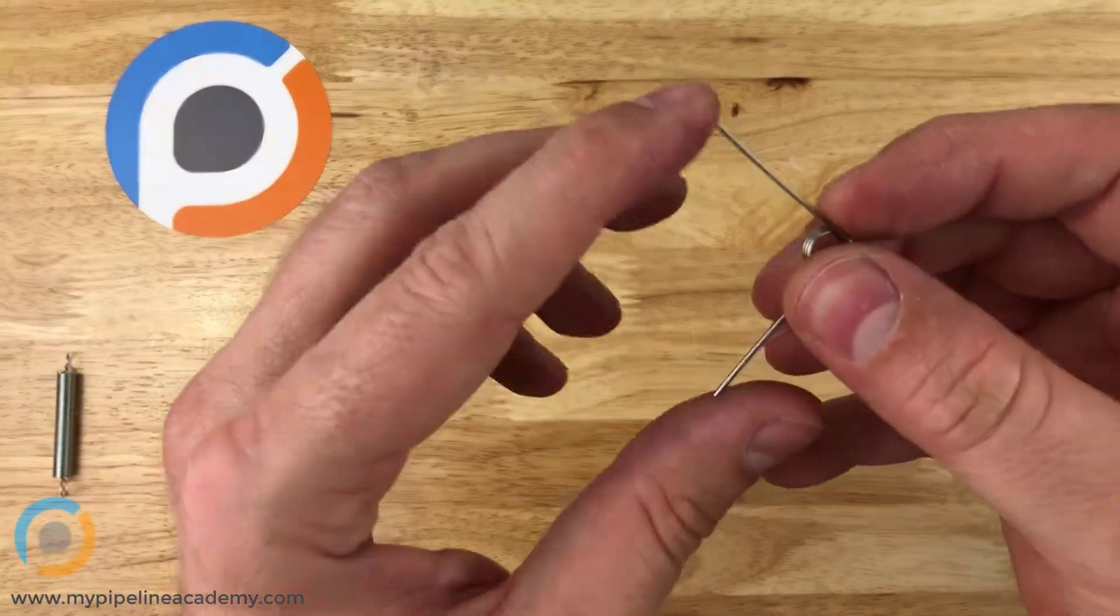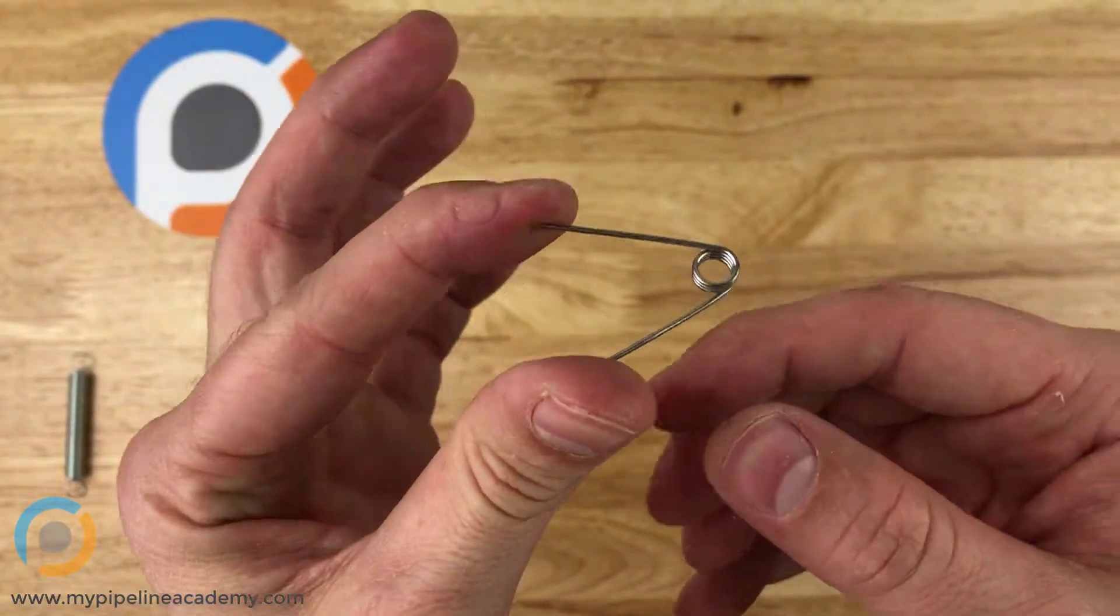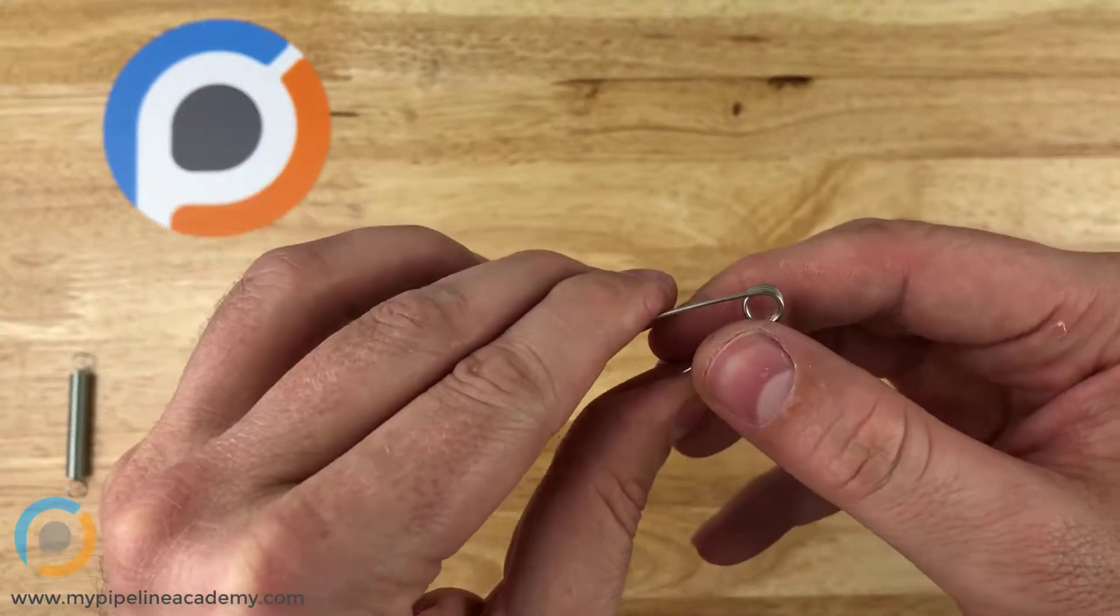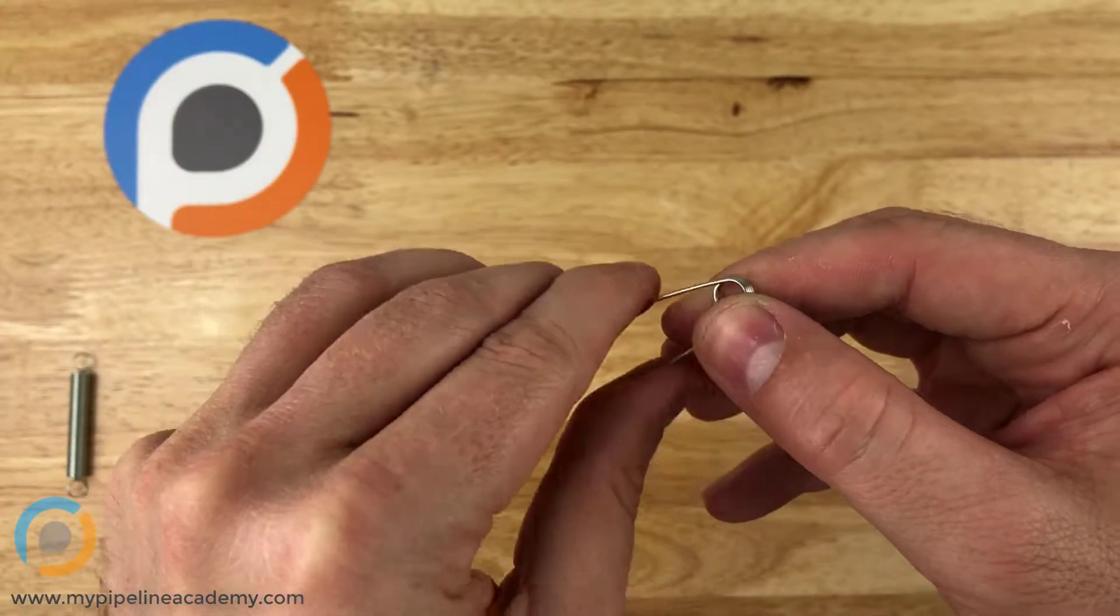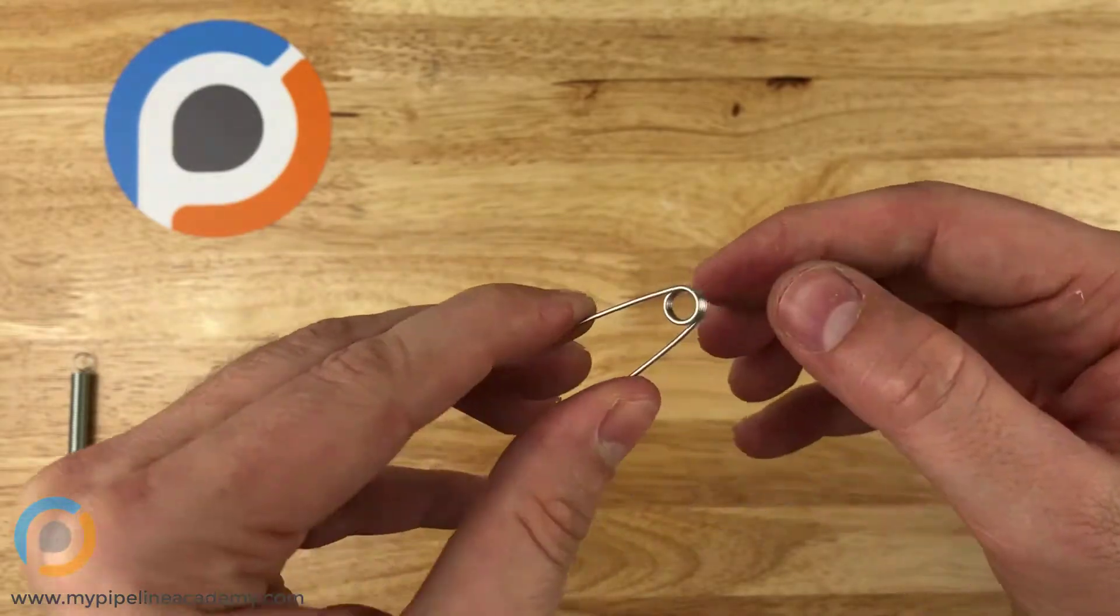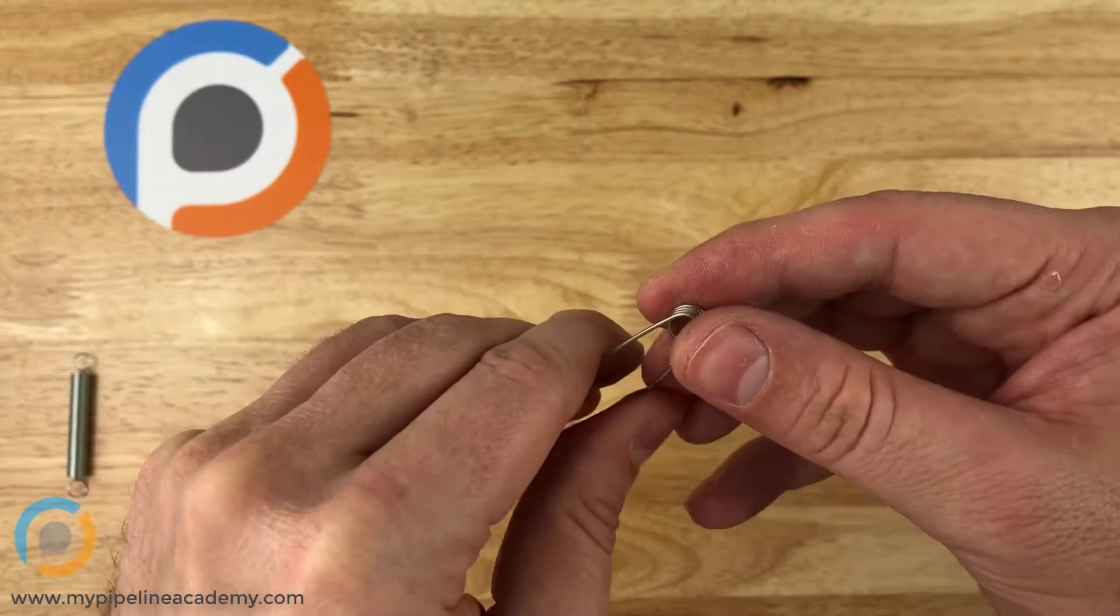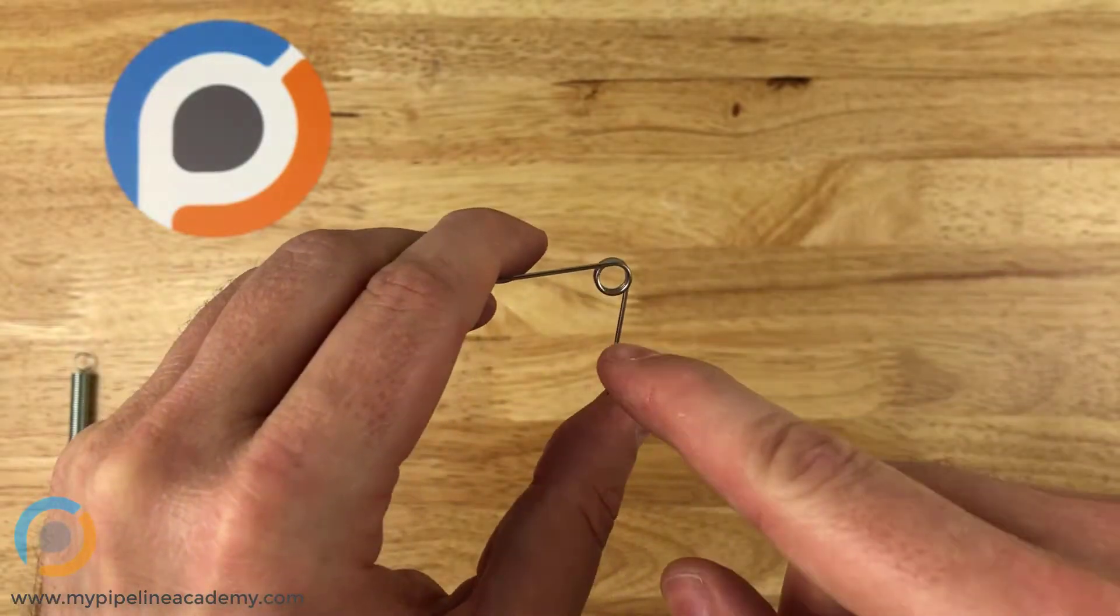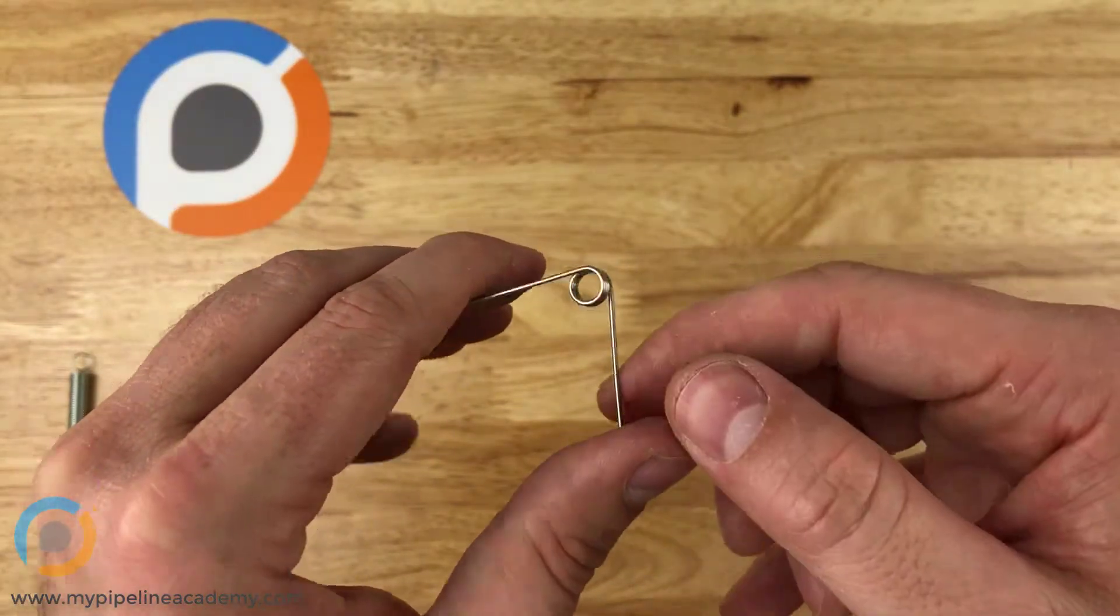Next we have a torsion spring, this guy here. Torsion springs, unlike the compression or extension springs, they hold rotational energy so they produce rotational motion. You can see with my fingers right there rotating about the axis that goes through the center coil there.